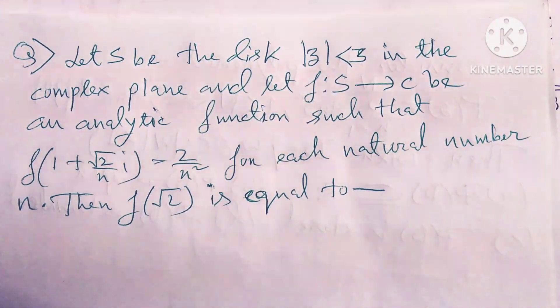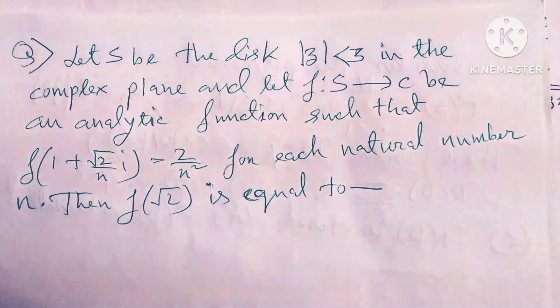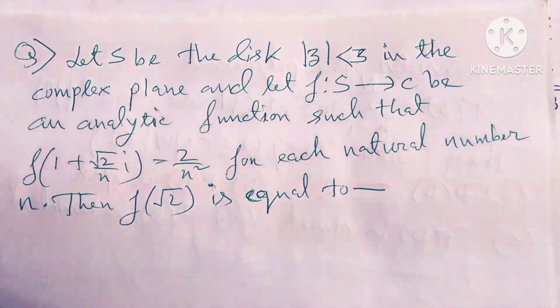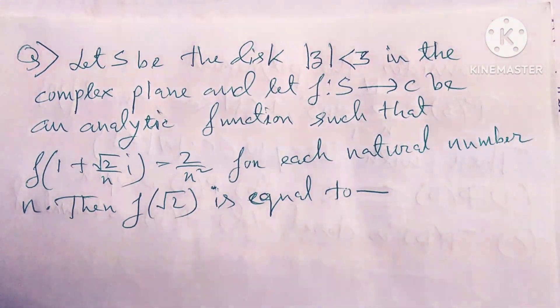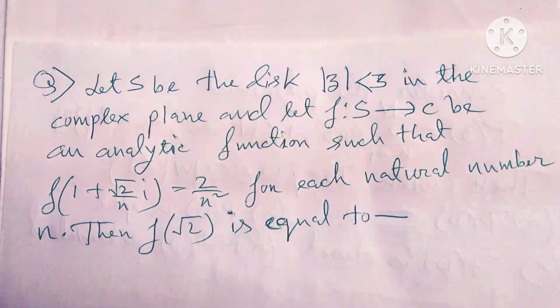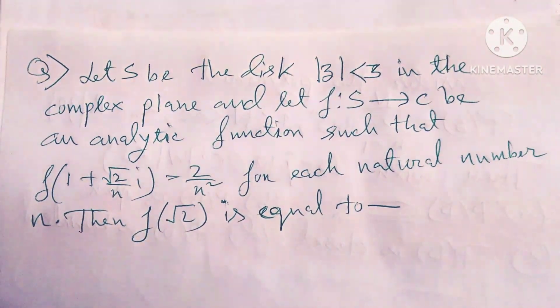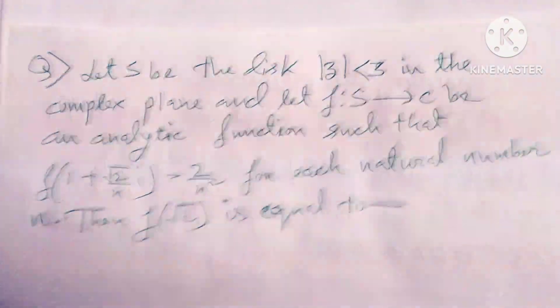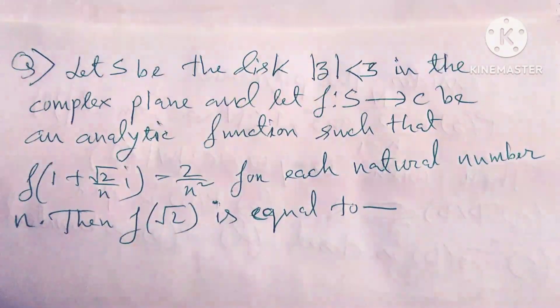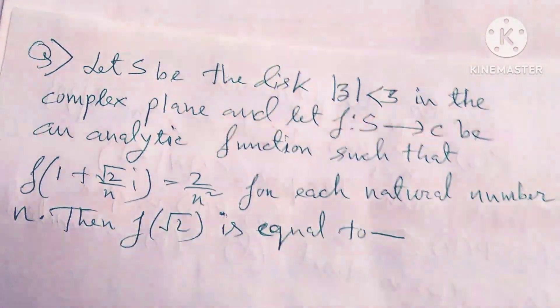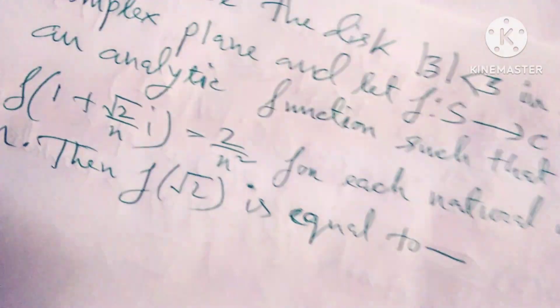Let S be the disk |z| < 3 in the complex plane and let f: S → C be an analytic function such that f(1 + √2/n i) = 2/n² for each natural number n. Then f(√2) is equal to—I have to find out.